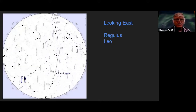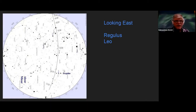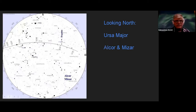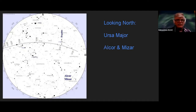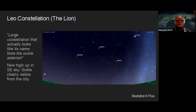Rotating the chart to put east at the bottom, if you look east you'll see the bright star Regulus in the constellation Leo the Lion — Berta will be talking about that very shortly. And if you rotate the chart so north is at the bottom and face north, very high in the sky you'll find the Big Dipper upside down, also called Ursa Major, with the two pointer stars that point at Polaris.